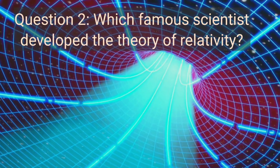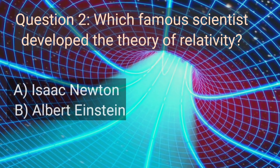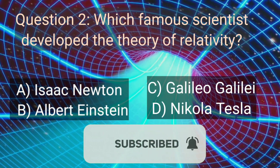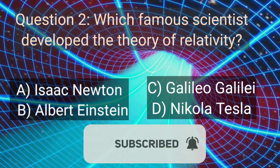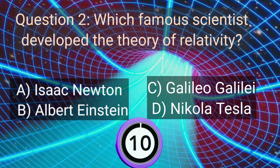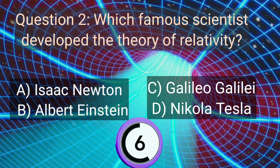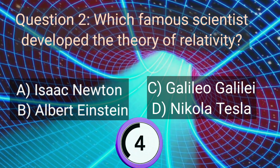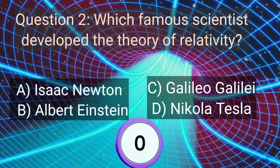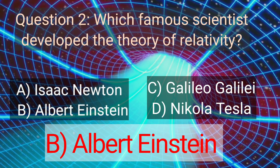Question 2. Which famous scientist developed the theory of relativity? A. Isaac Newton, B. Albert Einstein, C. Galileo Galilei, D. Nikola Tesla. You have only 10 seconds to think. Your time is starting now. Okay, friends, your time is up. The right answer is B. Albert Einstein.